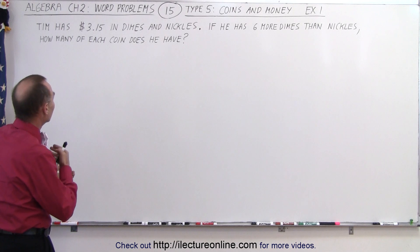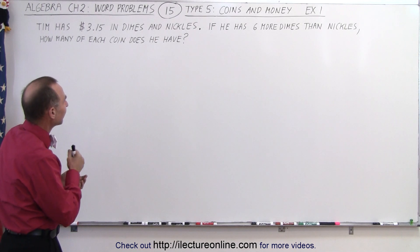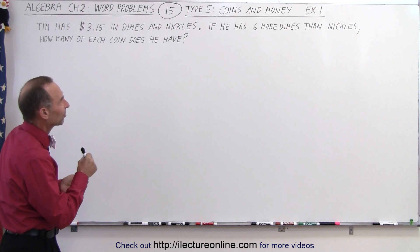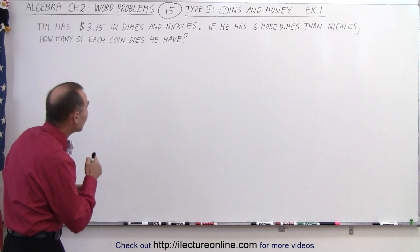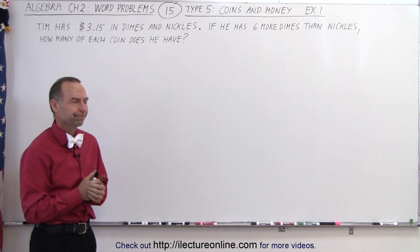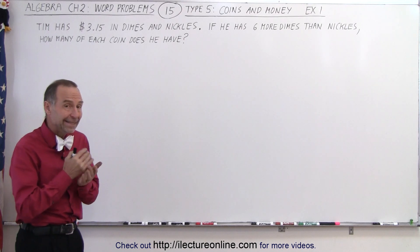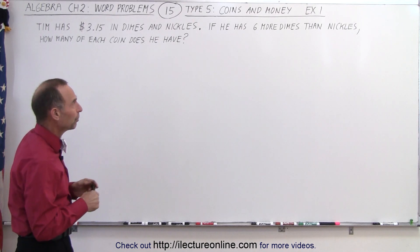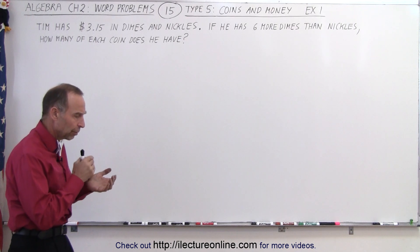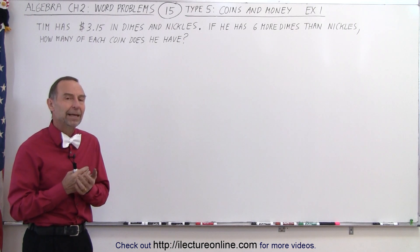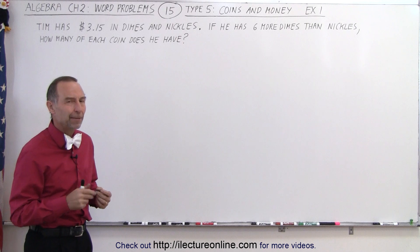Tim has three dollars and fifteen cents in dimes and nickels. If he has six more dimes than nickels, how many of each coin does he have? So how do you deal with a problem like this? They are indeed a little bit different than your typical word problem because we have to deal with both the quantity of each type and the value of each type.